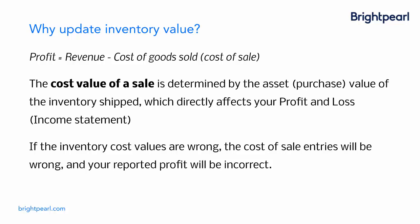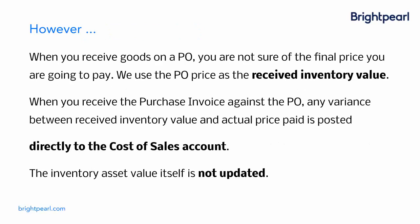If the inventory cost values are wrong, then the cost of sale entries will be wrong and your reported profit will be incorrect. However, when you receive goods on a purchase order — which is when you put the asset value into the system — you're not sure of the final price you're going to pay because you've not necessarily received the purchase invoice.